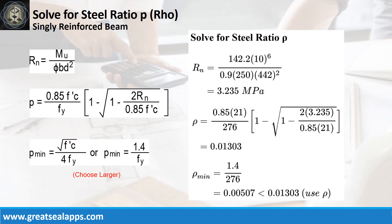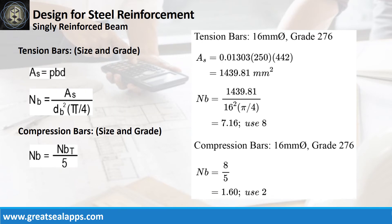Given maximum moment of 142.2 kN·m, resistance factor of 0.9, b equals 250 mm, and d equals 442 mm, the beam design ratio Rn equals 3.235 MPa. Given ρ equals 0.01303, b equals 250 mm, and d equals 442 mm, the area of steel for tension bars is 1439.81 square millimeters, and the number of bars for a 16 mm bar is 8.